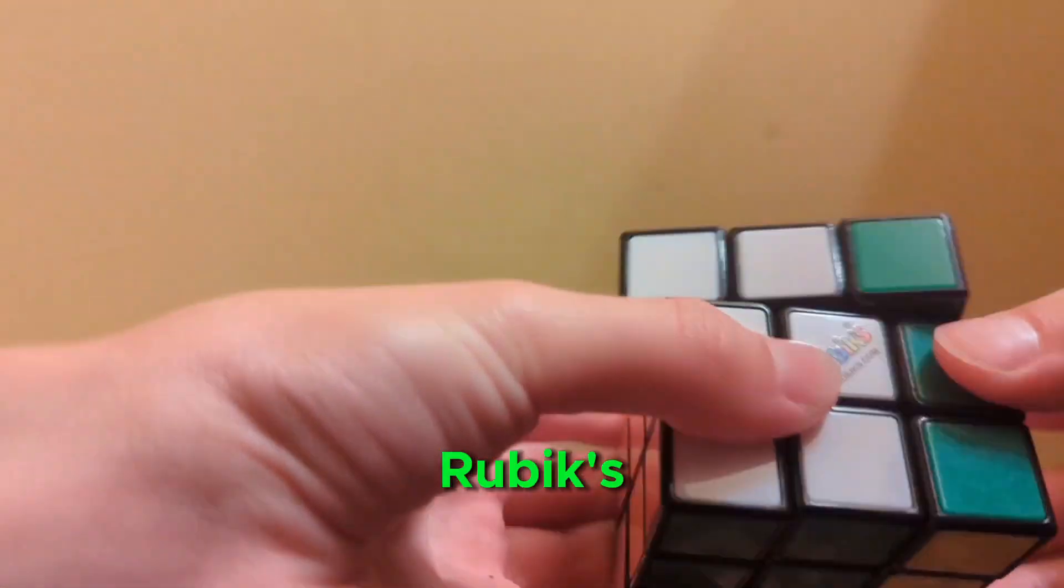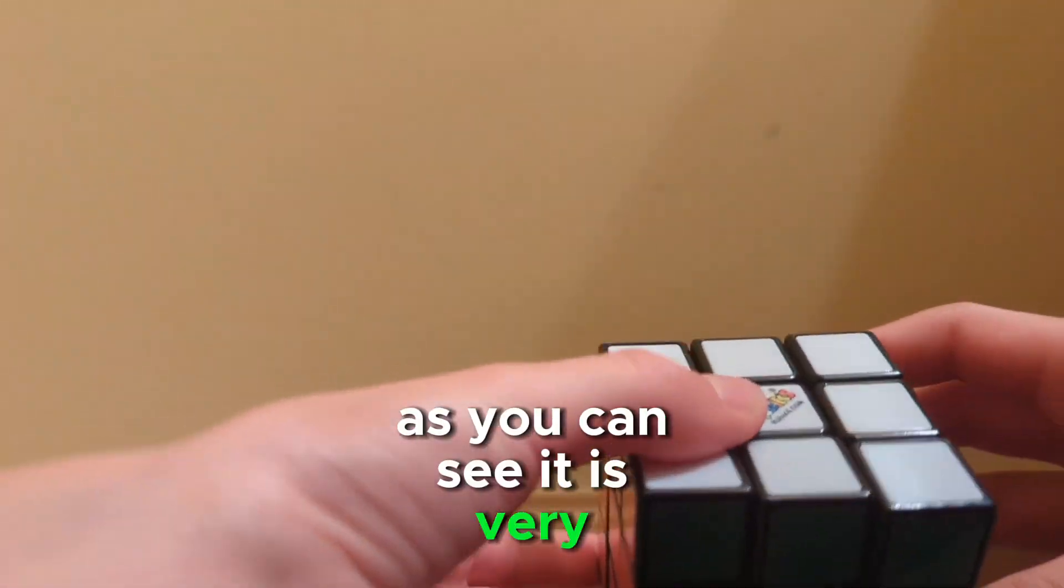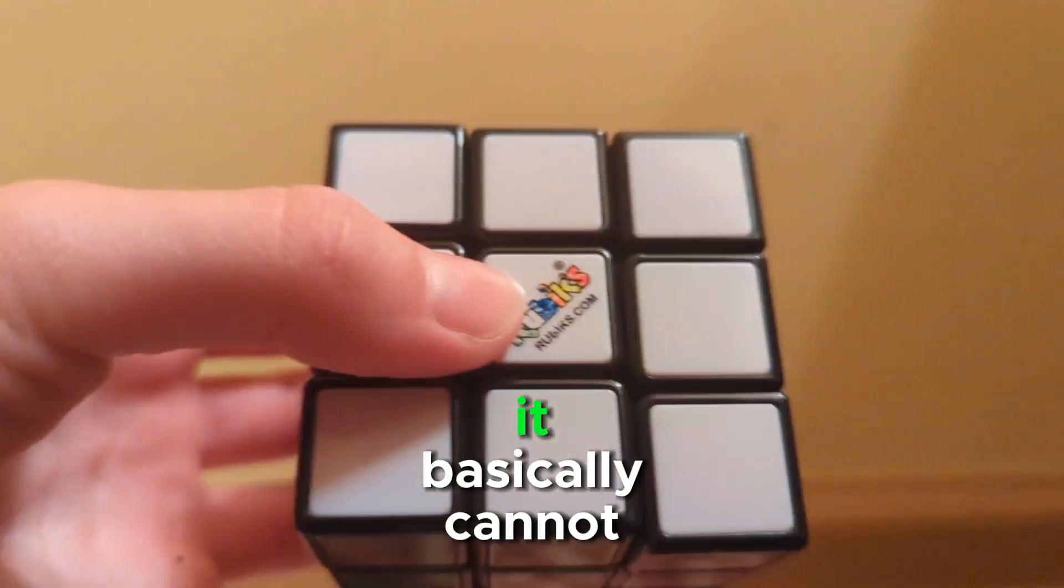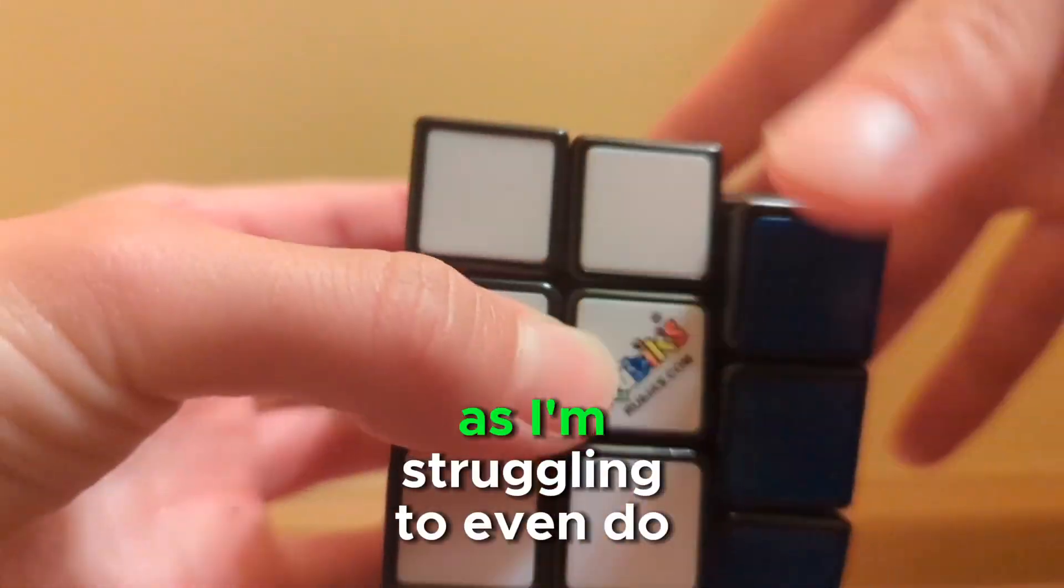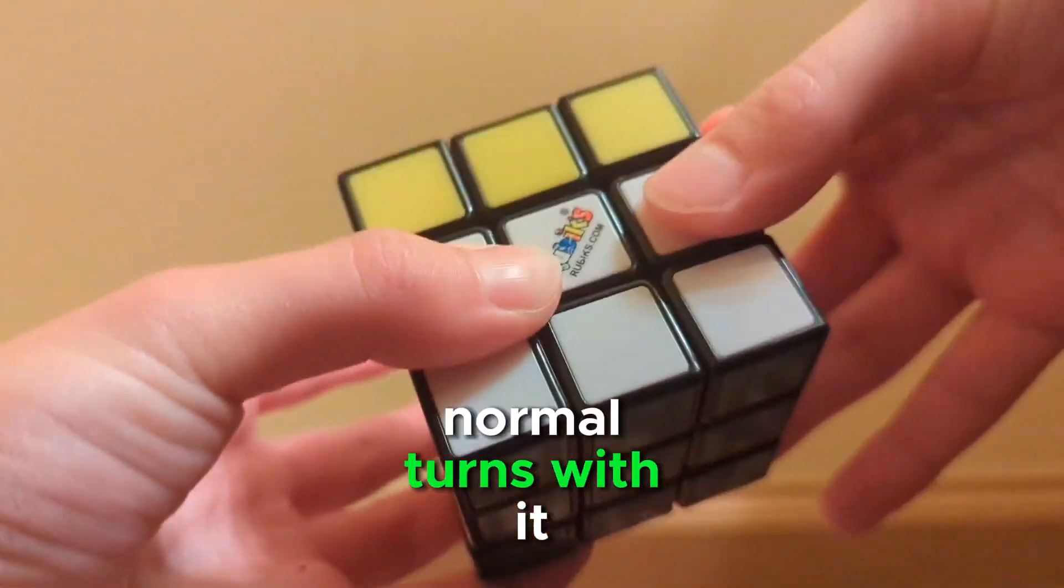First here is the original Rubik's. As you can see it is very crunchy and loud. It basically cannot corner cut, as I'm struggling to even do normal turns with it.